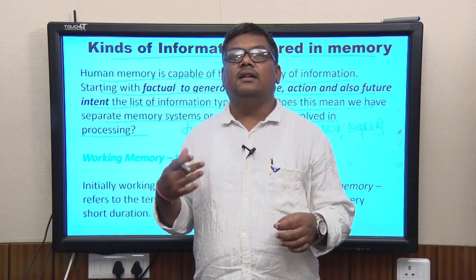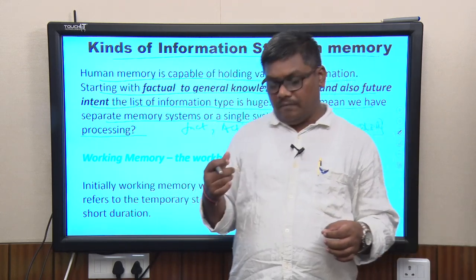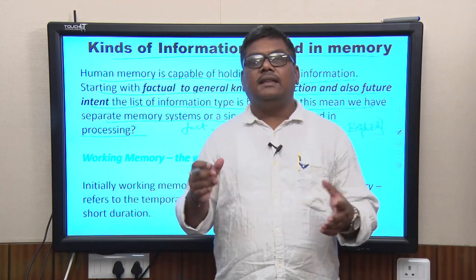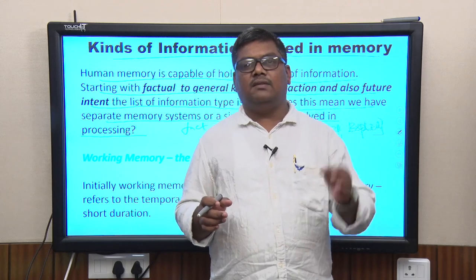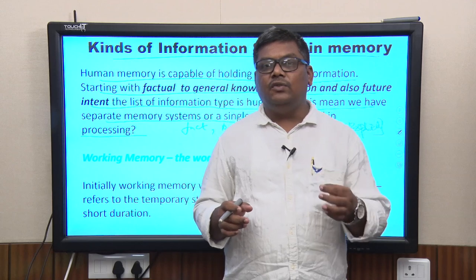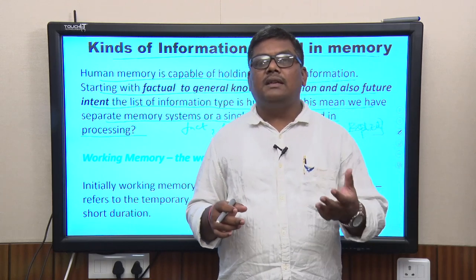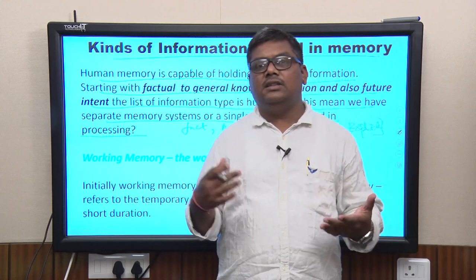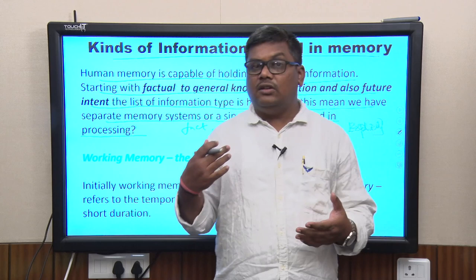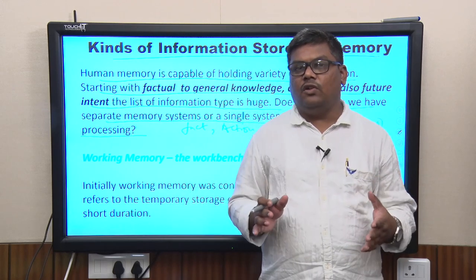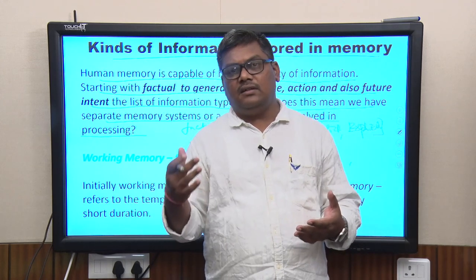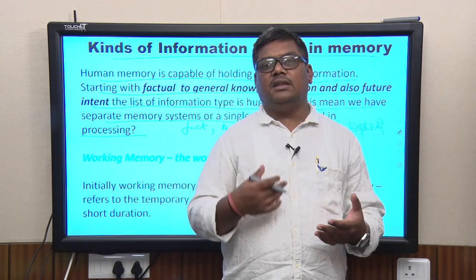We continue today from where we left off. Atkinson and Shiffren defined human memory as a three-part system. The first part is the sensory register, where all information comes in and stays for very few seconds. The amount the register can hold is large but in very raw form — that is why we had the echo and the icon as the formats in which external information is grasped.